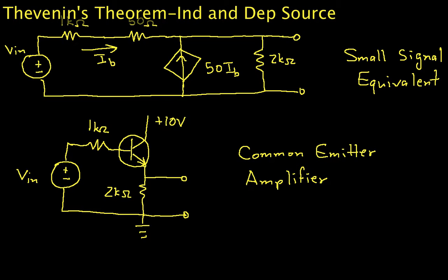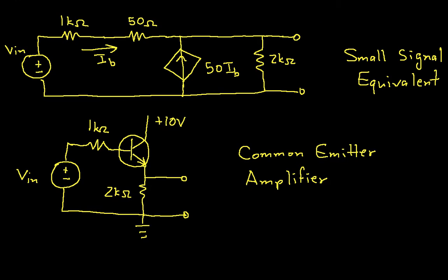So you can see that I've got two circuits here. The circuit that we'll actually find the Thevenin equivalent circuit of is the top one. This is a small signal equivalent model to the bottom one, and the bottom one is a particular type of transistor amplifier called a common emitter amplifier.